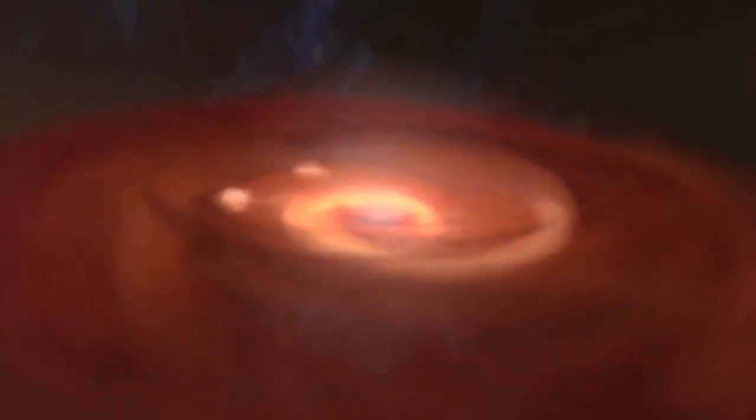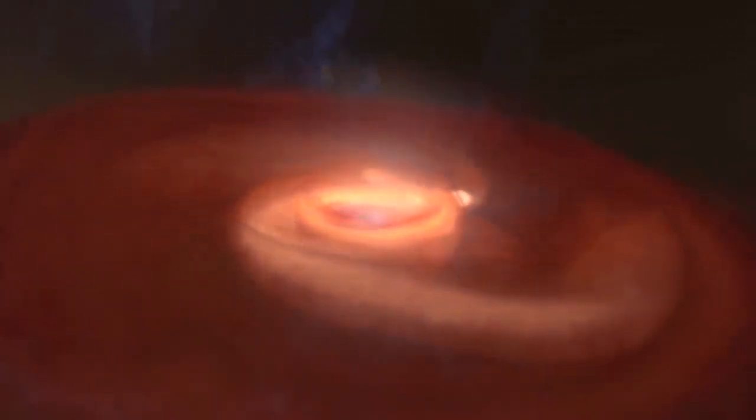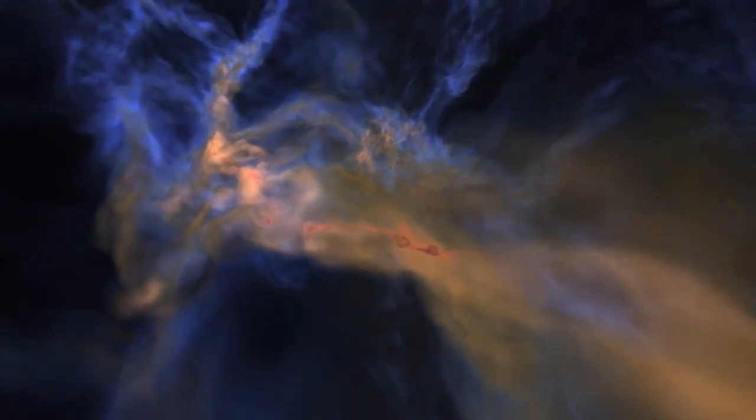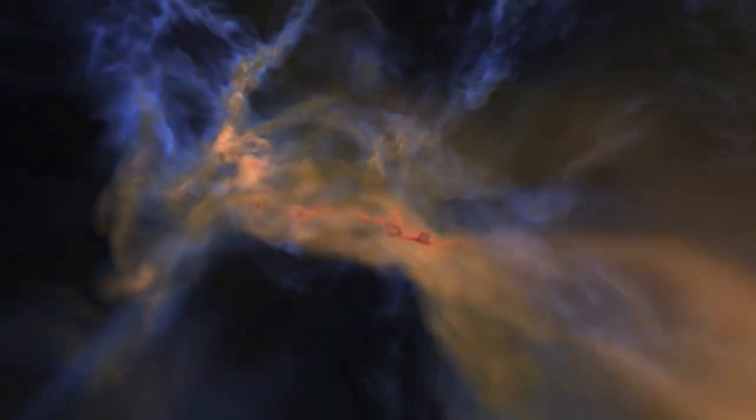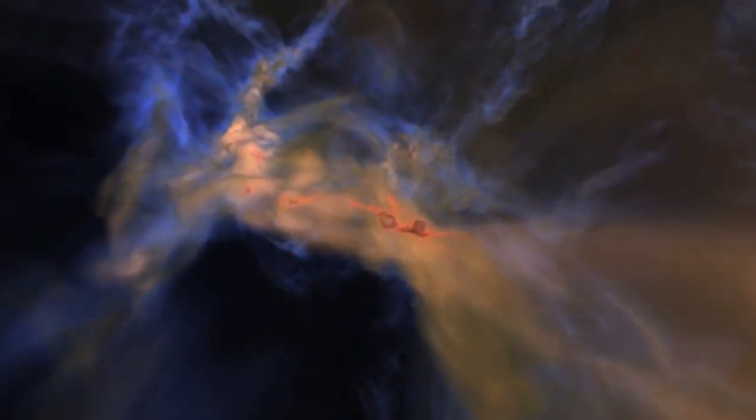1.29 million years might sound like a long time, but the previous estimate was 1.36 million years, a difference of 60,000 years. Think how many people could escape in 60,000 years. Of course, that is if any people are left in the solar system at all.